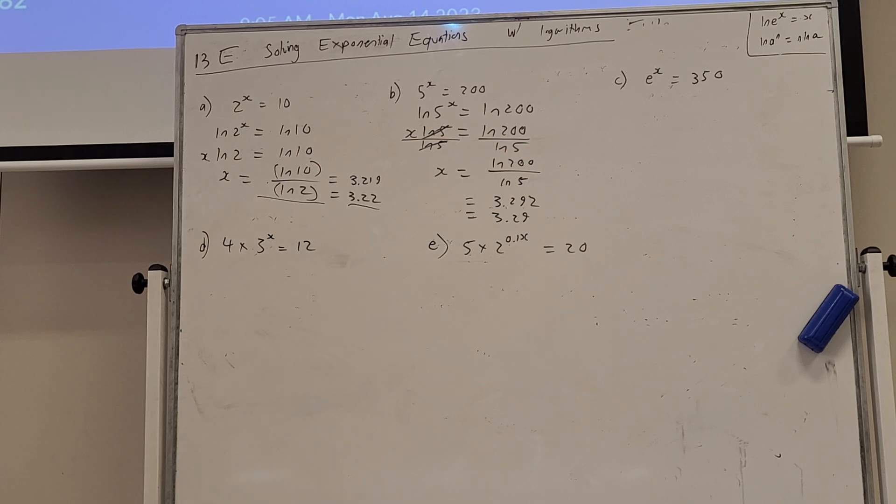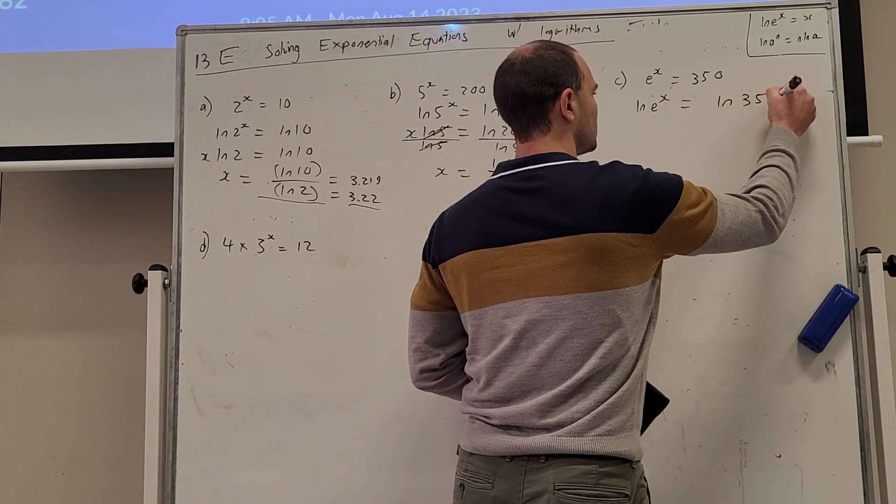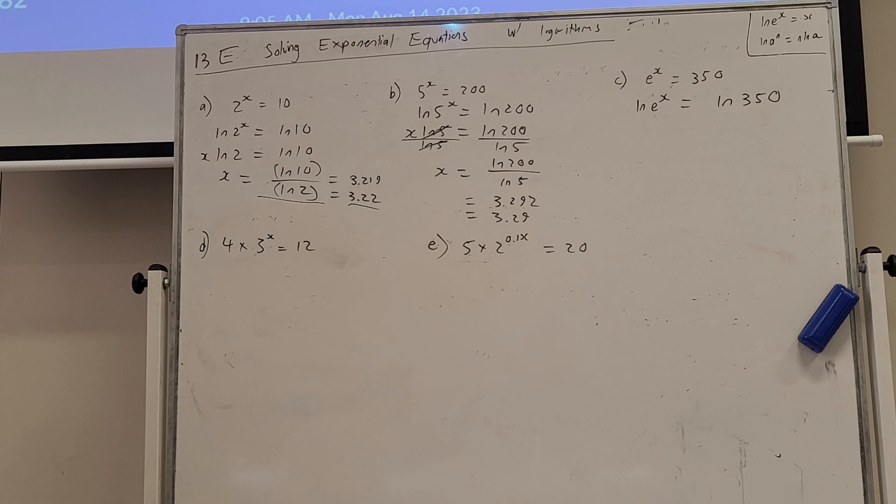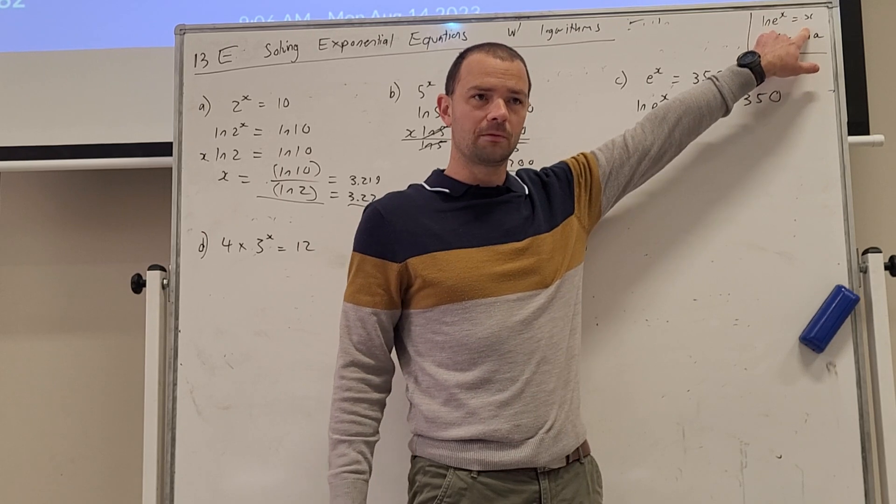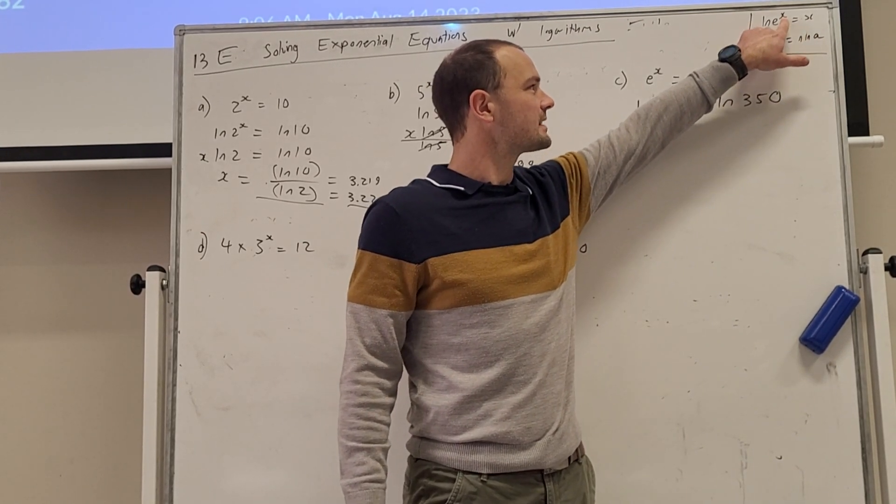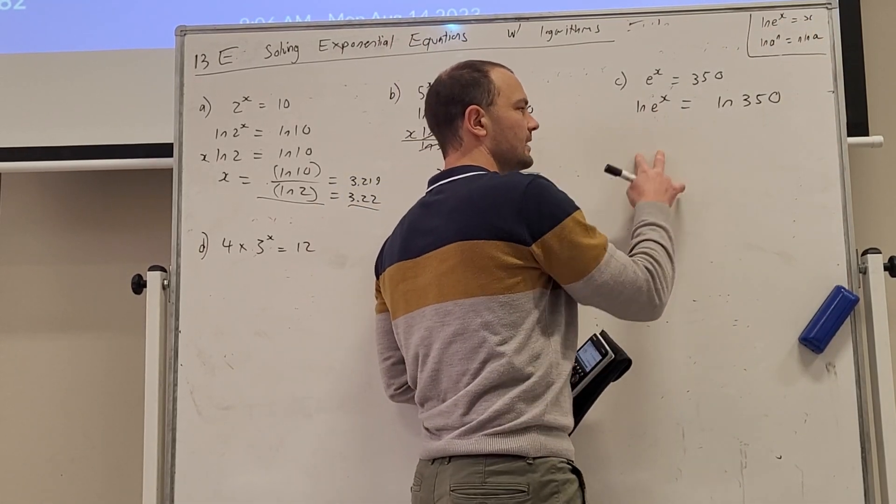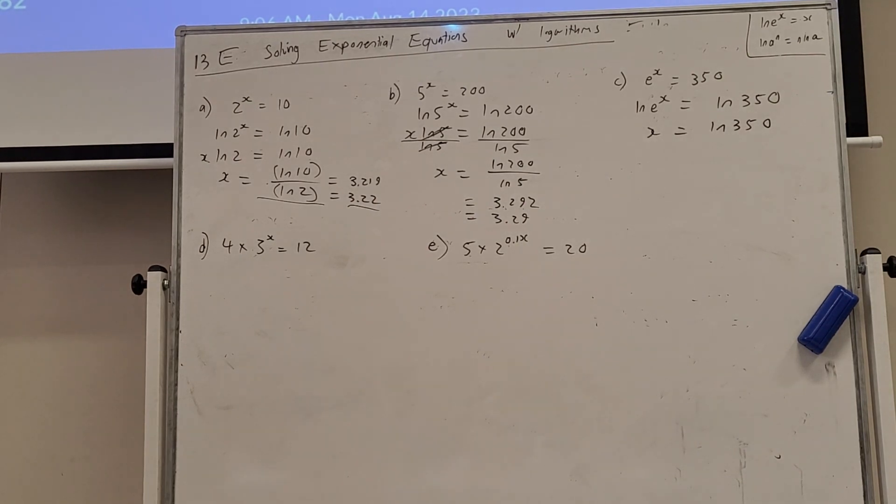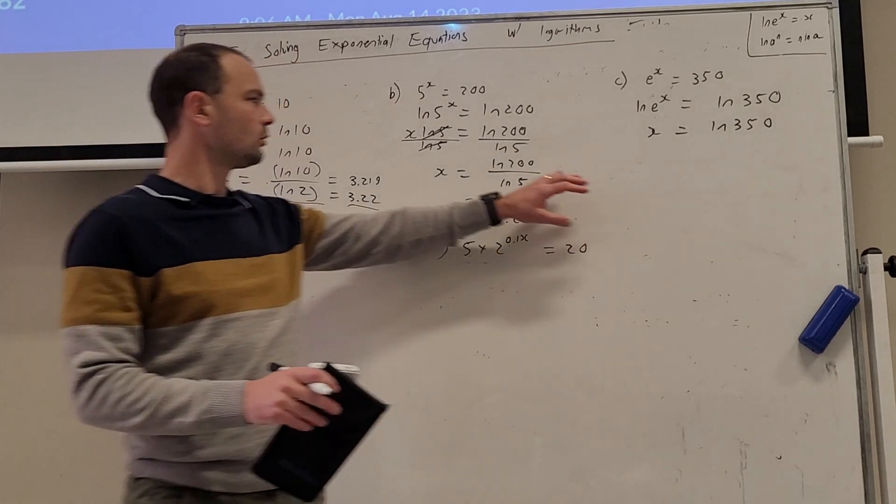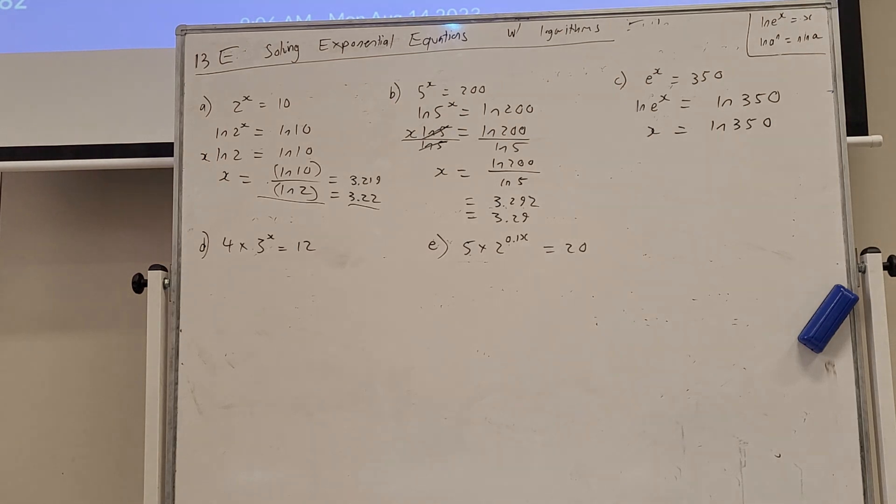Okay, I've got e to the x equals 350. So again, we'll start the same thing. We're going to apply ln to both sides. Now with this one, because the logarithm is in base e, and we have e to the power of x, one of the rules we're going to recall from the last exercise is ln e to the x actually simplifies to x. That simplifies to x. So this left-hand side simplifies straight to x. So we should recognise that, but you still could go completely through this process and get the exact right answer as well.